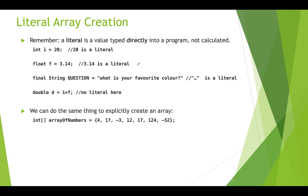Here's what literal array creation looks like. In this case we're creating an array of ints called array of numbers. Instead of using the new int and square brackets, what we have is a set of values in curly brackets separated by commas — so these are all ints like 4, 17, etc., separated by commas, with an opening curly bracket, a closing curly bracket, and a semicolon.